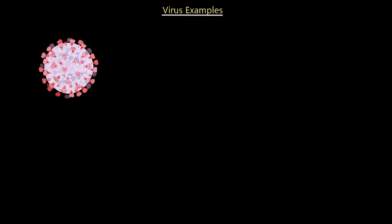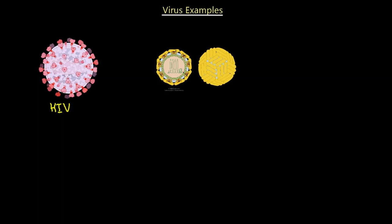Finally, let's look at some examples of what viruses look like. First is the HIV virus — one of the larger viruses in nature. As you can see, it has an envelope in addition to a capsid, and that envelope has little projections that help with binding to the binding site of the host cell.